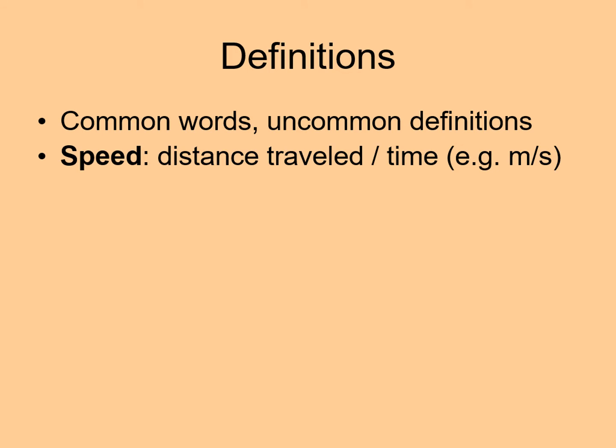The first term we need to define is speed. We've already talked about this one. Speed is the distance something travels divided by the time it travels. The units will be distance over time, such as meters per second. There's nothing very unusual here.